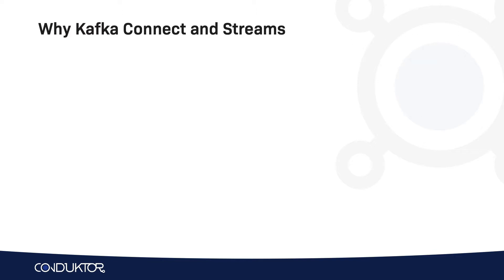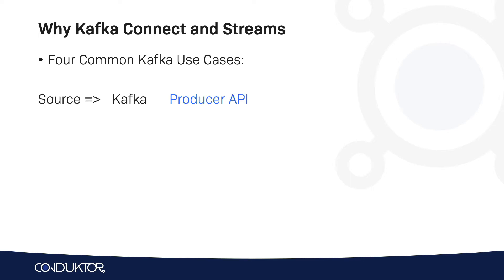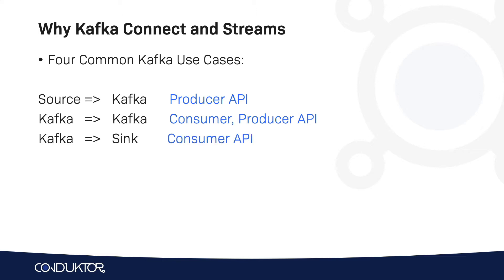If we look at Kafka Connect and Kafka Streams, we have four common Kafka use cases. To take a source database into Kafka, we need to use the Producer API. To take data from Kafka and put it back into Kafka, we need both to read the data — Consumer API — and then to write the data — Producer API. For doing Kafka into a sink, we need to use a consumer. And if we also have an application, this is also a consumer.